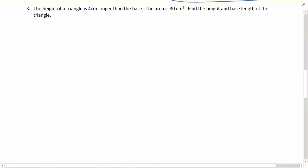Okay, so if we draw a triangle, we'll try and draw it so it makes sense. The height is four centimeters longer than the base. So if the base is b and the height is four more than the base, the height would be base plus four. So here we've got the base is equal to b and the height is equal to b plus four.